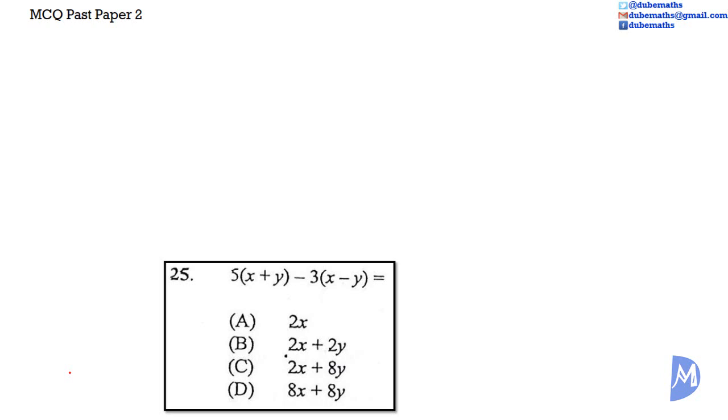Remember, distributive law says that multiplication is distributive over addition. Thus, 5 multiplied by x plus y is equal to 5x plus 5y. And negative 3 multiplied by x minus y is equal to negative 3x plus 3y.